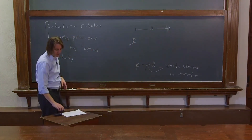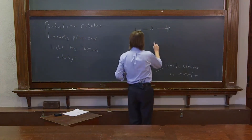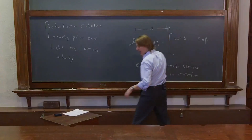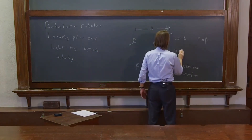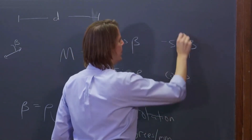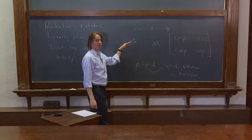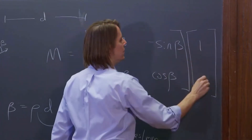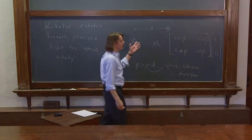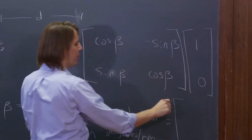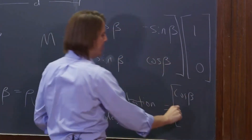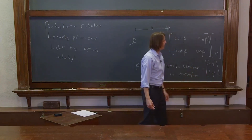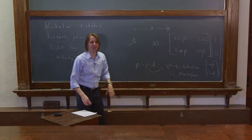Let's look at the matrix. The Jones matrix for the rotator is: cosine beta, minus sine beta / sine beta, cosine beta. So if you want to rotate through an angle beta, that's what you get. We can test it out — if we multiply it by horizontal light going through this material, it would end up being equal to cosine beta over sine beta. That's the formula for rotating light by beta: cosine is the horizontal part, and sine is the vertical part. The whole matrix works for any linear light going in, not just horizontal light.